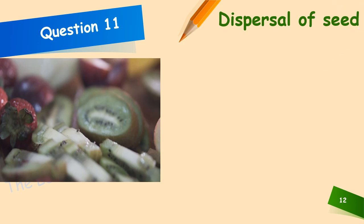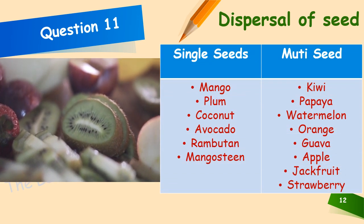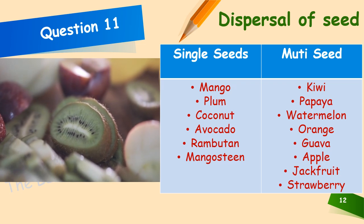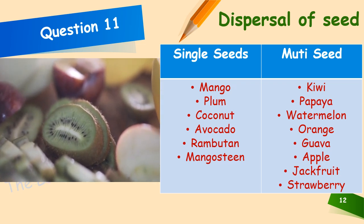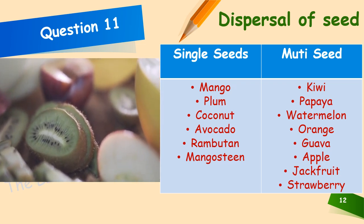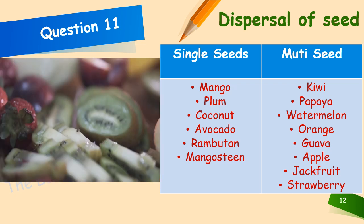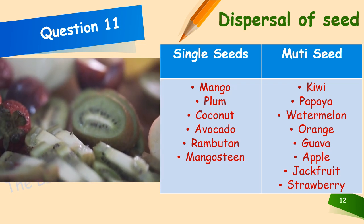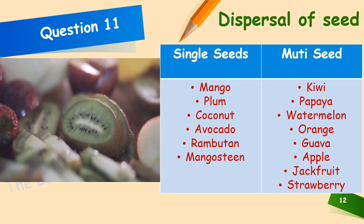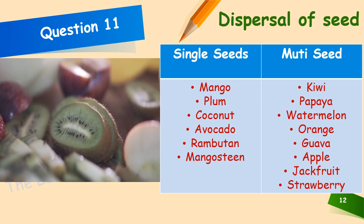Seed types: single-seeded fruits include mango, plum, coconut, avocado, rambutan and mangosteen. Multiple-seeded fruits include kiwi, papaya, watermelon, orange, guava, apple, jackfruit and strawberry.